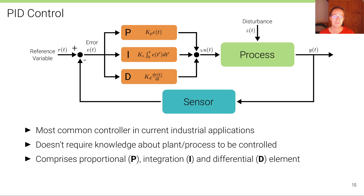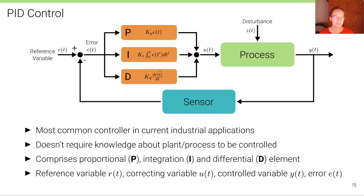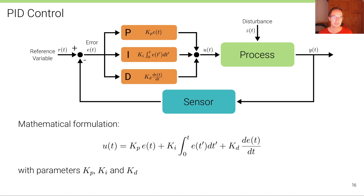The PID controller sums up the error, the integral of the error over all previous time steps, and the derivative of the error at the current time step, each multiplied by the respective parameters. This sum is the output u — the correcting variable handed to the process. The mathematical formulation is simply the sum of these three elements: the proportional, integral, and differential elements with their corresponding parameters.